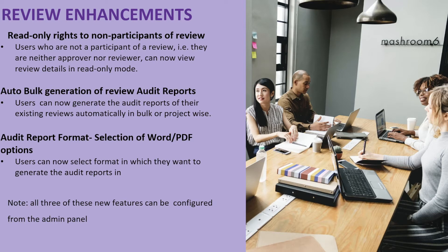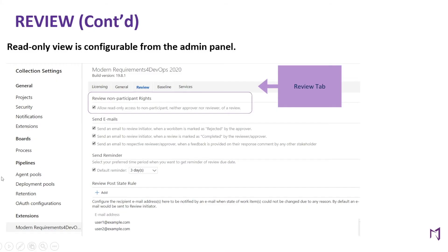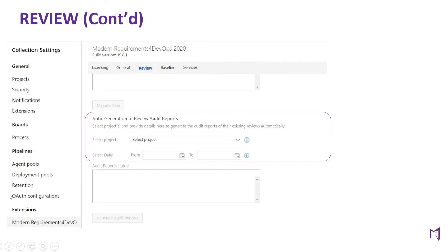The next enhancement is auto bulk generation of review audit reports. As you may recall in previous versions, you could only generate a report per review. Whereas with this new feature, you can now generate audit reports for all reviews in a project. This too can be configured from admin settings under Modern Requirements for DevOps and the review tab.